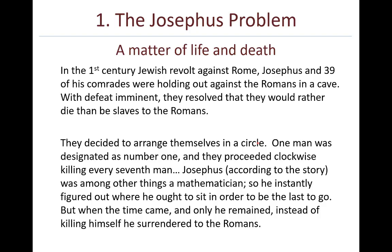The Josephus problem is actually based on a real-life event that happened during the first century. In the first century Jewish revolt against Rome, Josephus and 39 of his comrades were holed up against the Romans in a cave. With defeat imminent, they resolved that they would rather die than be slaves to the Romans. They decided to arrange themselves in a circle. One man was designated as number one, and they proceeded clockwise, killing every seventh man.